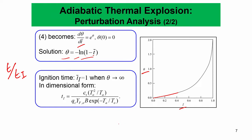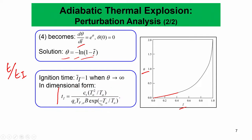The ignition time t_i is given by: t_i = c_v T₀² / (T_a · T₀) × 1 / (B · Y_f0 · e^(−T_a/T₀)). This shows a strong temperature dependence through both the pre-exponential T₀² / T_a term and the Arrhenius exponential term. If c_v is large, t_i is large; if Q_c is large, t_i is smaller; if Y_f0 is large, t_i is smaller; and if the Arrhenius term is large, t_i is smaller. These are the first-order factors controlling ignition delay time of a homogeneous mixture.